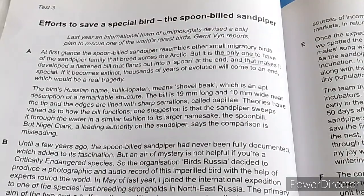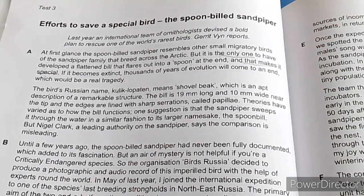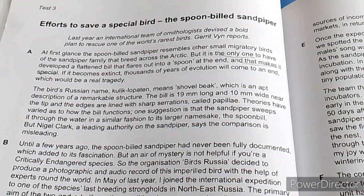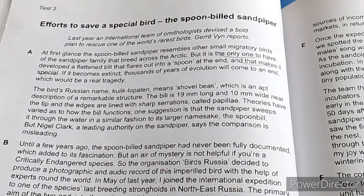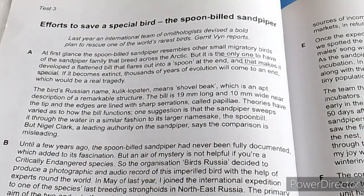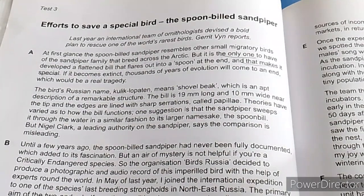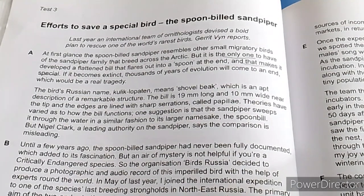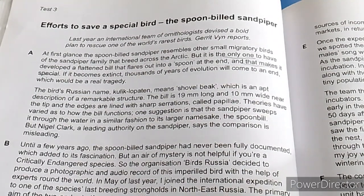Reading further in Section A: the bird's Russian name means 'shovel beak,' which is an apt description of this remarkable structure. The bill is 19 mm long and 10 mm wide near the tip, and the edges are lined with sharp ridges. None of our MCQ or blank questions relate to this specific information.